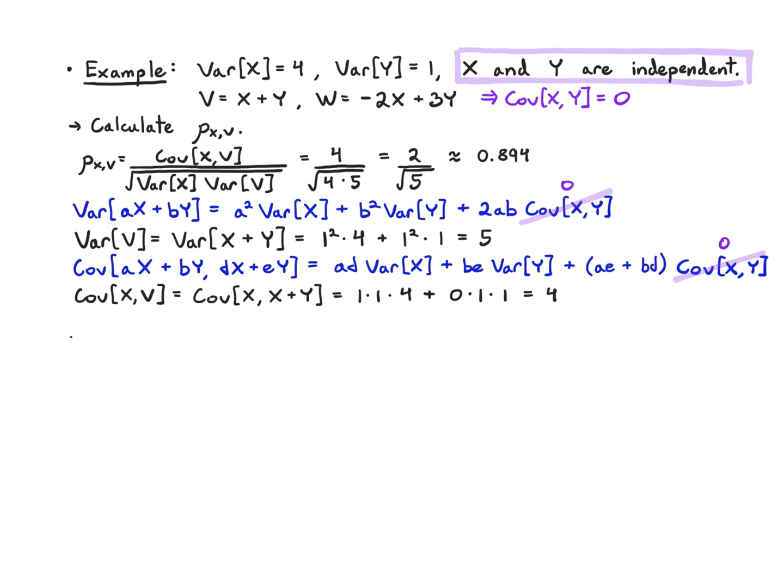So there's a pretty good linear relationship between x and v, which makes sense because v = x + y and x has more variance, so more of the energy in v comes from x, with only a small perturbation from the variance of y.